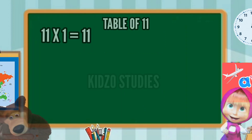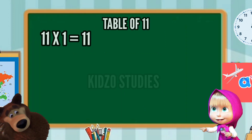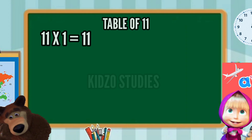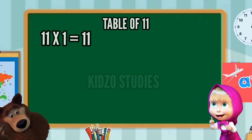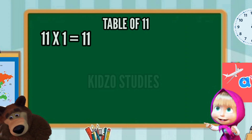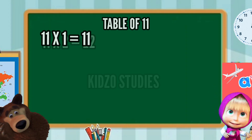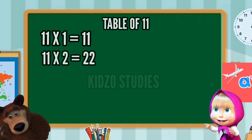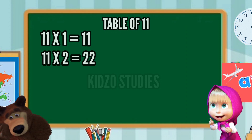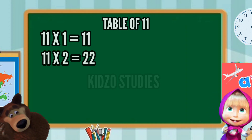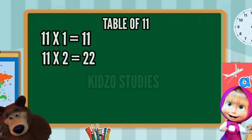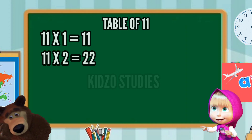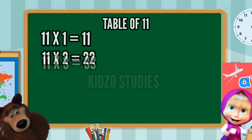Eleven ones are eleven. Eleven twos are twenty-two.